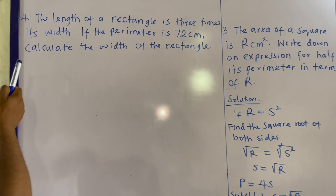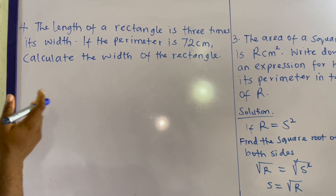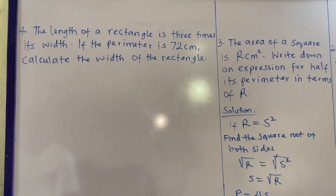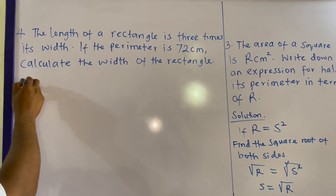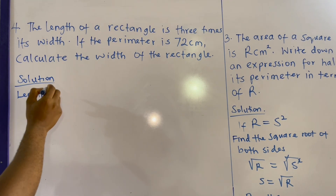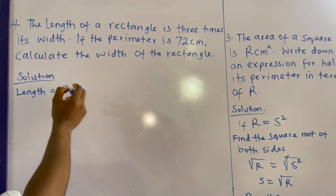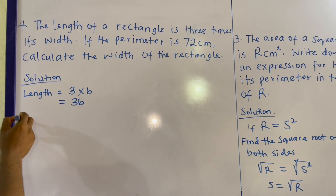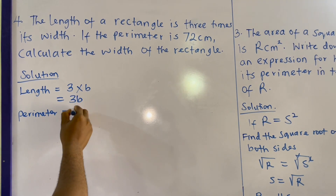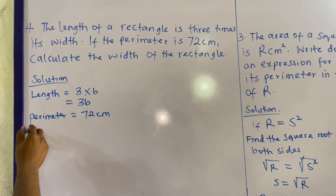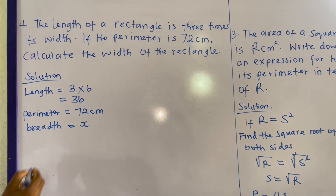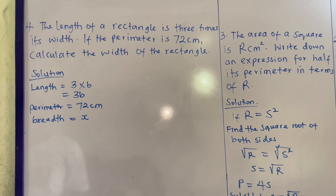For our final example: the length of a rectangle is 3 times its width. If the perimeter is 72 centimeters, calculate the width. From the question, the length is 3 times the breadth, so length equals 3b. The perimeter is 72 centimeters, and the breadth is unknown.